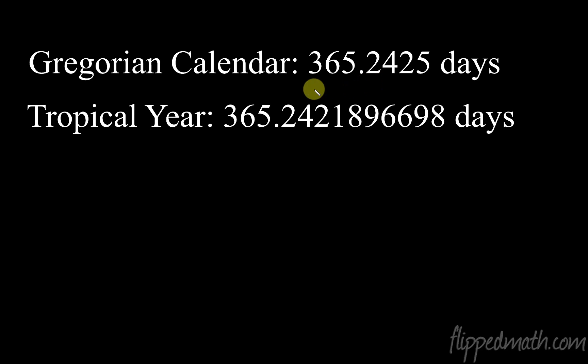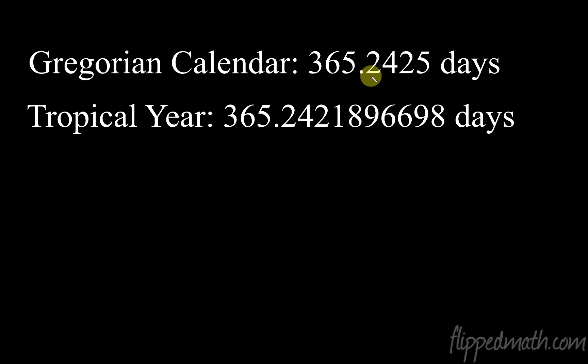Our new Gregorian calendar is 365.2425 days on average. So for those who like to be the smartest person in the room: if a teacher asks how many days are in a year and someone says 365, and another says 365.25, you can raise your hand and say, 'No, there are 365.2425 days' — because that is actually the number of days on average in our current calendar system.